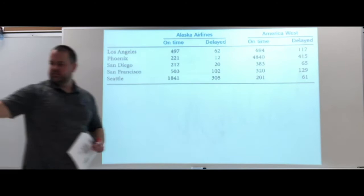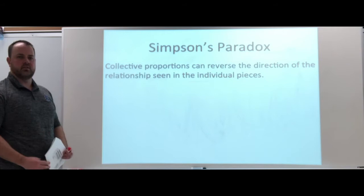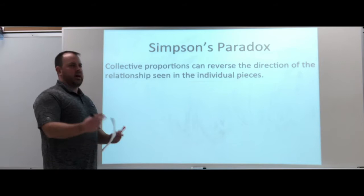Now this is something we call the Simpson's paradox. Collective proportions can reverse the direction of the relationship seen in the individual pieces. Our individual pieces were each city. Every city had its own delay and Alaska was lower for every single one.